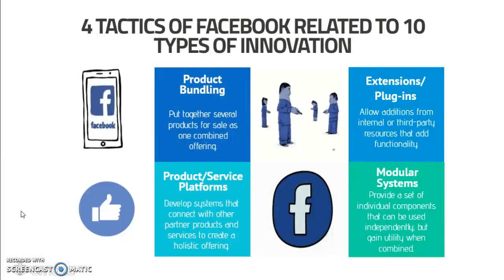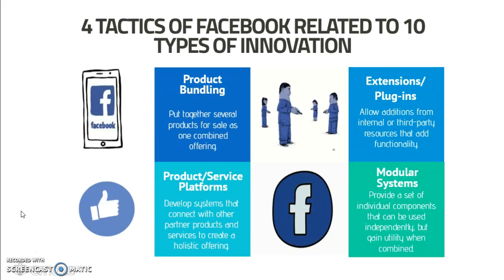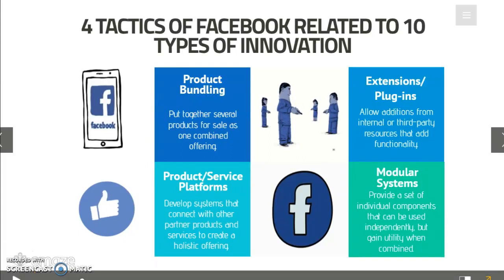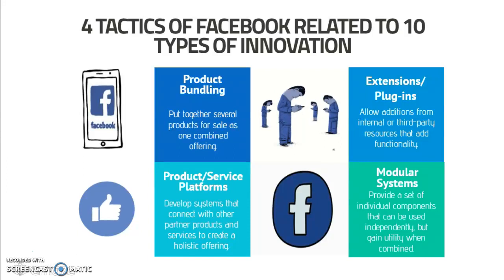So, I identified four tactics of Facebook that relate to the ten types of innovation. First is product bundling — this is to put together several products for sale as one combined offering. The second one is product service platforms, which develops systems that connect with other partnered products and services to create a hosted offering. The third one is extensions and plugins, which allows additions from internal or third-party resources that add functionalities. And the last one is modular systems, which provide a set of individual components that can be used independently but gain utility when combined.